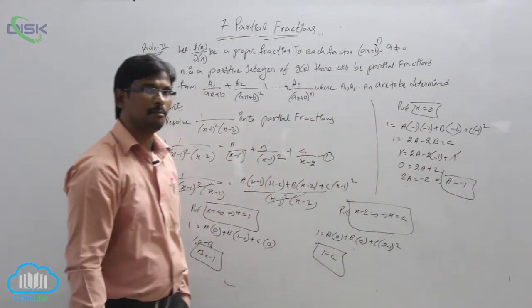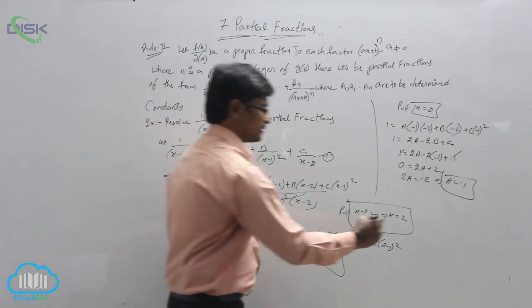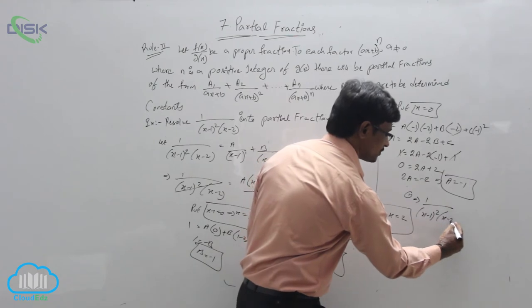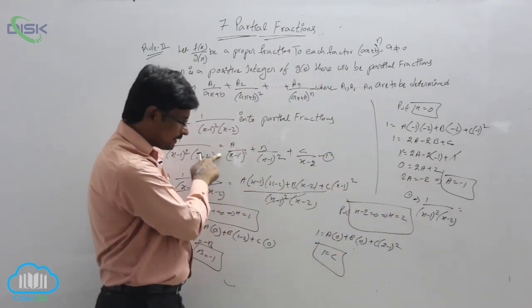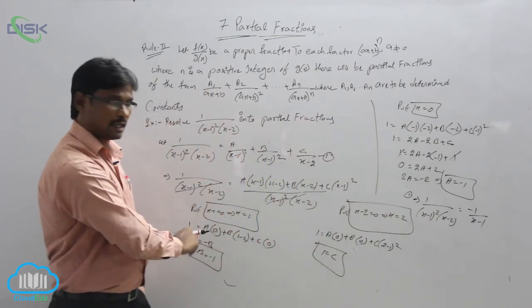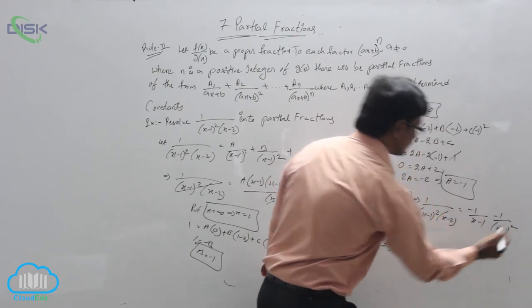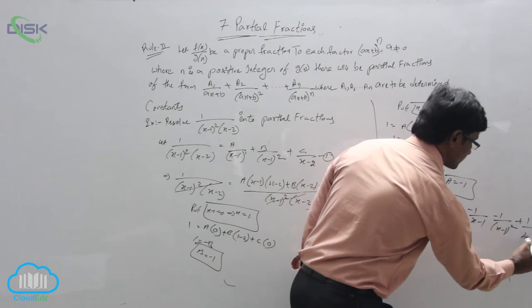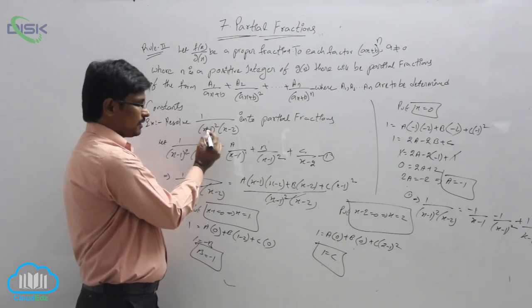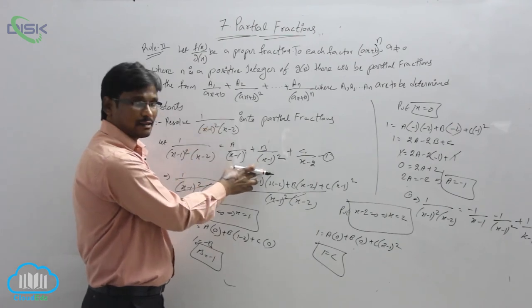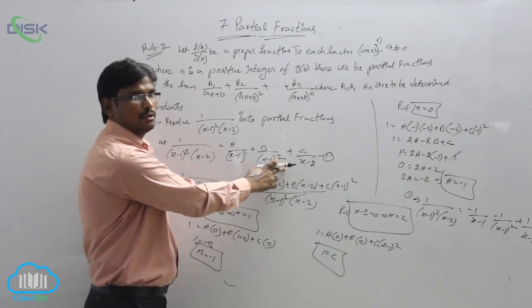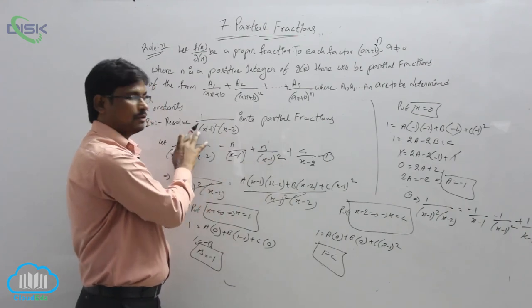Substituting A, B, C back into equation 1: 1/[(x-1)²(x-2)] = -1/(x-1) + (-1)/(x-1)² + 1/(x-2). These are the partial fractions. Note: if the power were (x-1)^3, we would add one more term C/(x-1)^3. With practice, this method becomes easy. This completes the second rule.